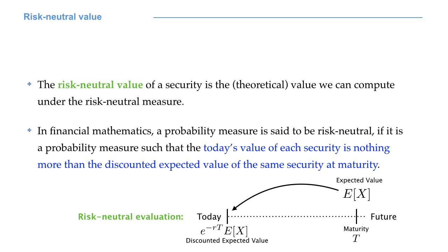The risk-neutral value of a security is the theoretical value we can compute under the risk-neutral measure. In financial mathematics, we speak of risk neutrality if a probability measure is such that the today's value of each security is nothing more than the discounted expected value of the same security at maturity. Remember that, in most cases, the value of a security on the market is a random variable — that's why we need the expected value.